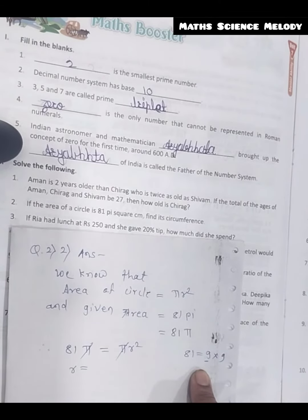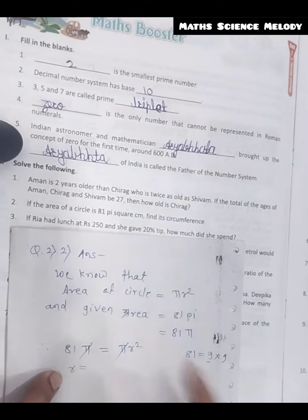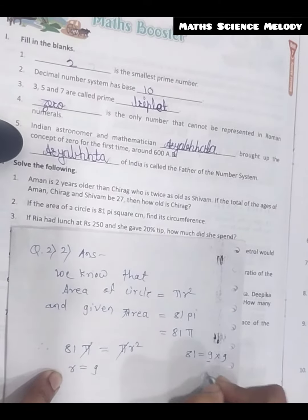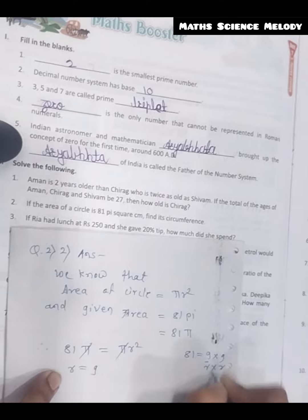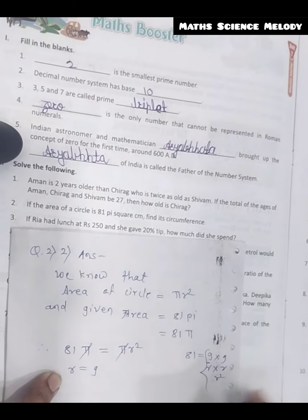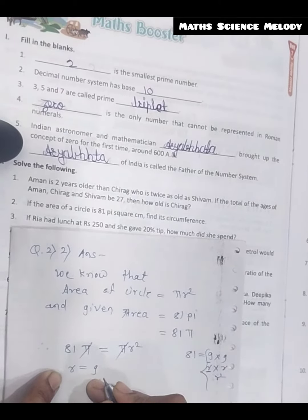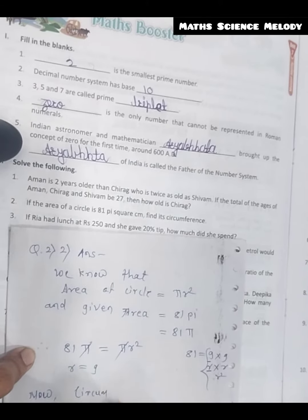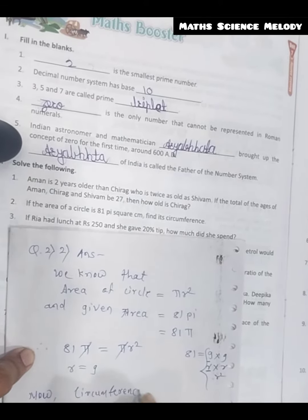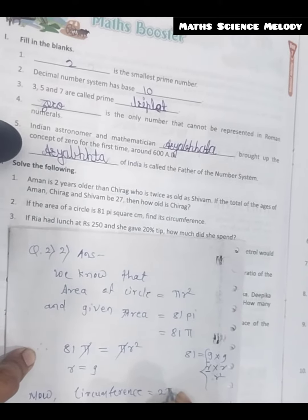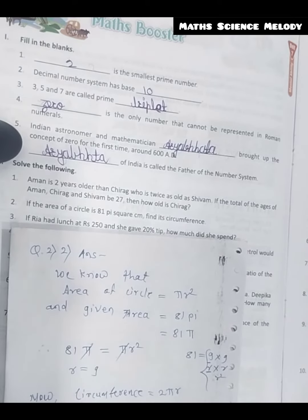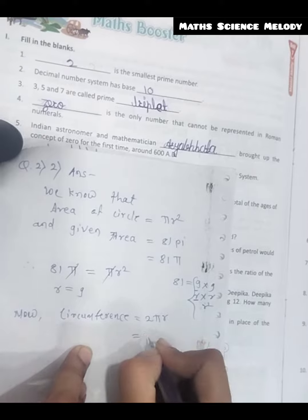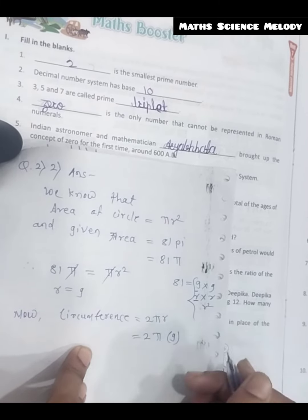If we find the value of r² then we can find the value of r. So r² = 81, therefore r = 9. So now, for circumference 2πr, we put the value r = 9.